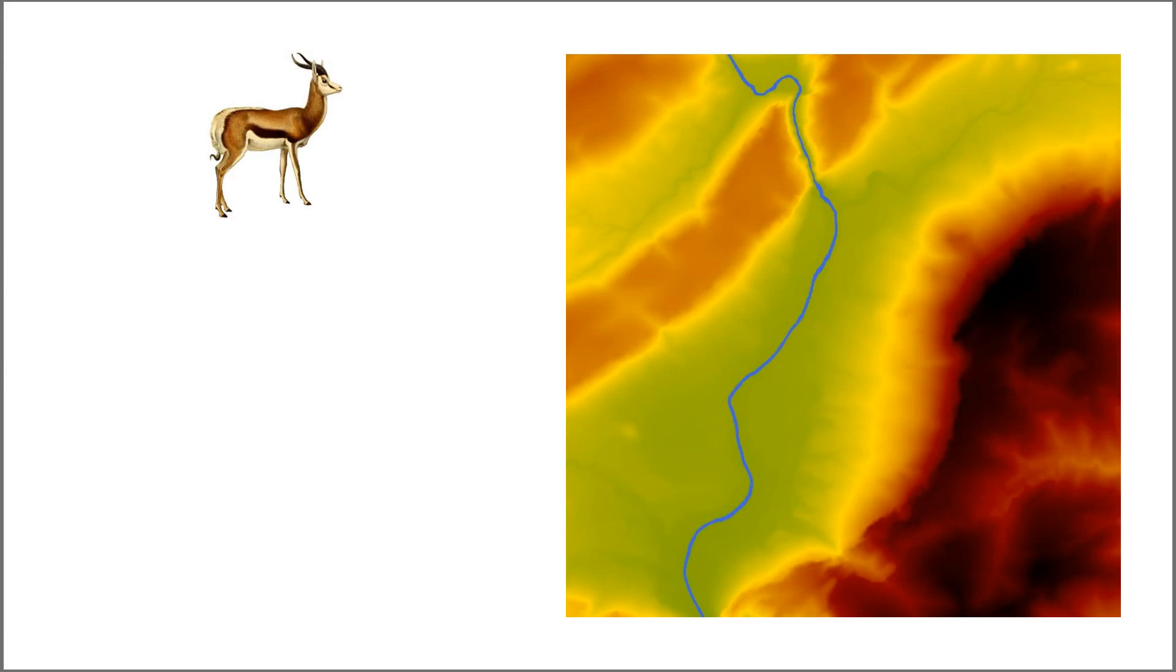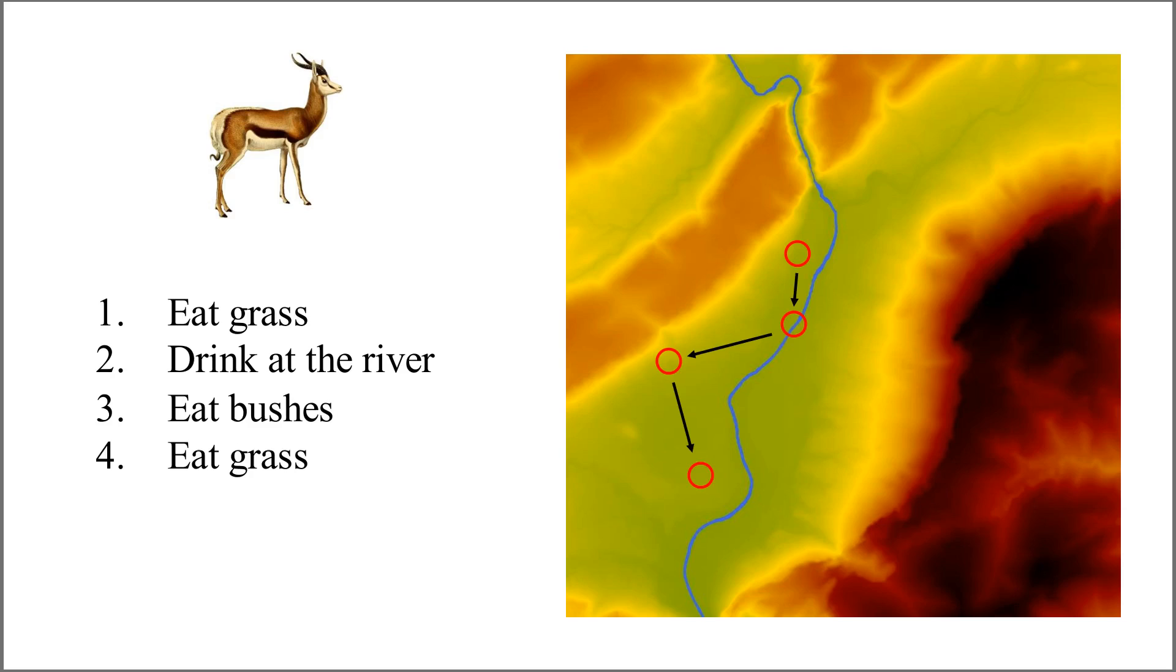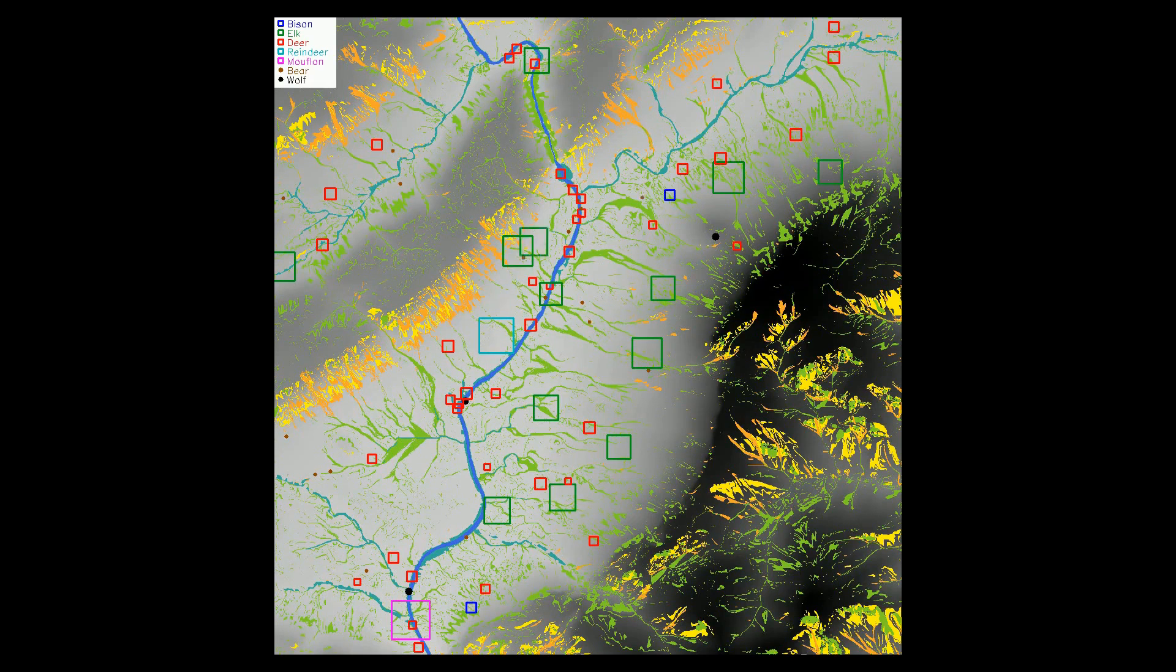For each herd, we incrementally sample new activities based on the needs of the species, while ensuring that essential activities are represented. We repeat this process until the planning for a day is fully constructed. This allows us to interactively follow activities of the animals during live exploration.